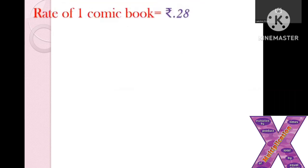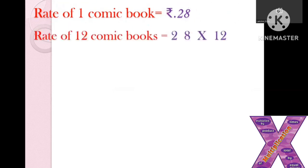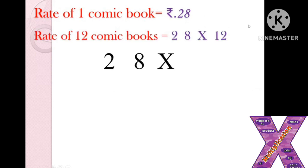Now I'll tell you how to present the answer. We know the value of one comic book, so we write: rate of one comic book is equal to 28 rupees. We have to find the rate of 12 comic books. To find that, we multiply 28 with 12.